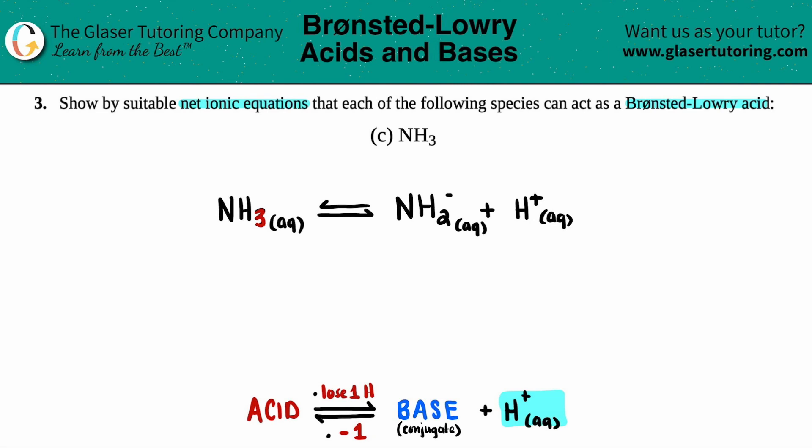But now we're done. And that is the balanced net ionic equation for the acid. NH3, that's the acid. This is the conjugate base, and it just breaks off one hydrogen. And that's what acids do. They always donate their one H.